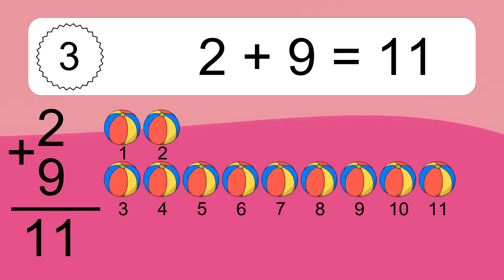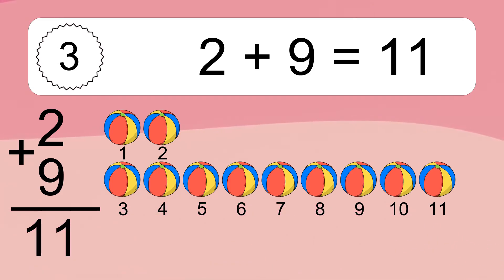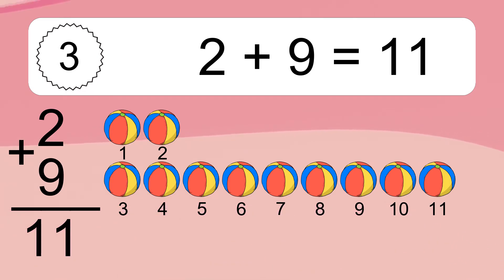2 plus 9 equals what? Let's count it: 1, 2, 3, 4, 5, 6, 7, 8, 9, 10, 11.